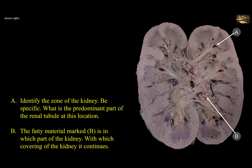Identify the zone of the kidney — be specific — and what is the predominant part of the renal tubule at this location? The fatty material shown here in B is in which part of the kidney, and with which covering of the kidney does it continue?